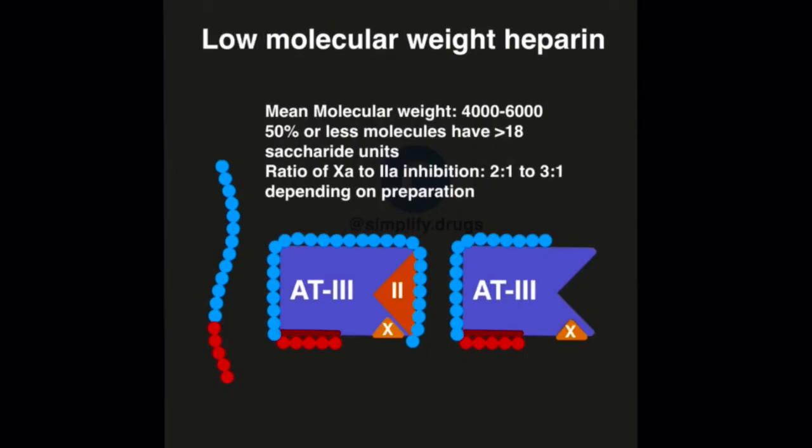Now let's move on to low molecular weight heparin preparations. These preparations have a mean molecular weight of 4000 to 6000. That would mean 50 percent or less of those molecules will have more than 18 saccharide units. So it translates into only half or less than half of the molecules inhibiting both factor 10 and factor 2.